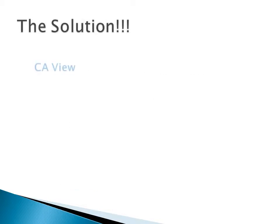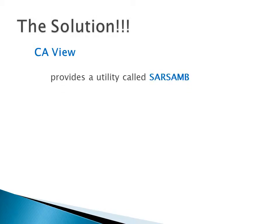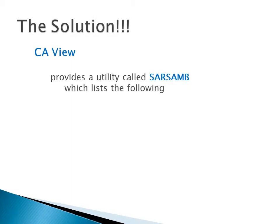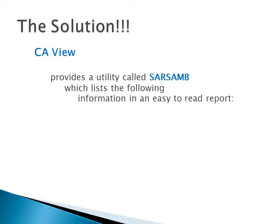The solution: CA View has provided a utility called SARS-SAM-B which lists the following information in an easy-to-read report: step name, proc step name, and DD name.